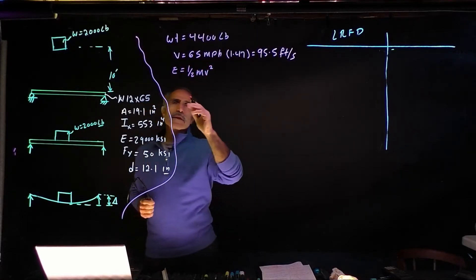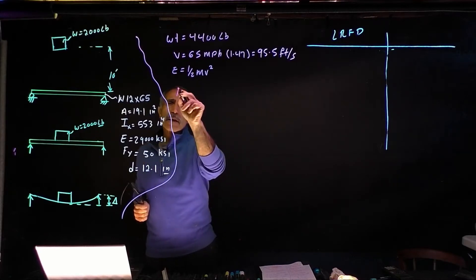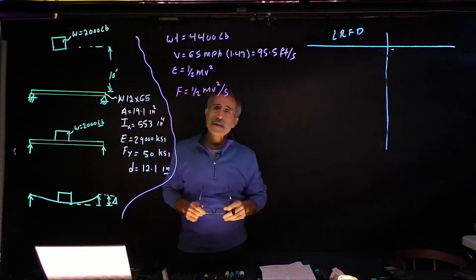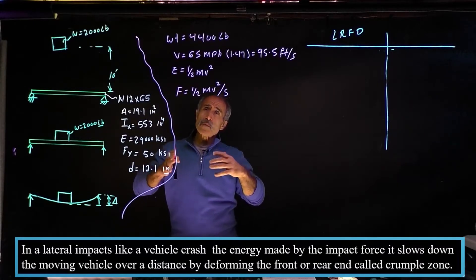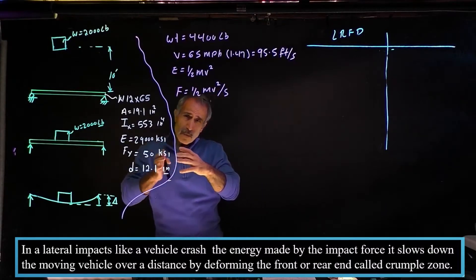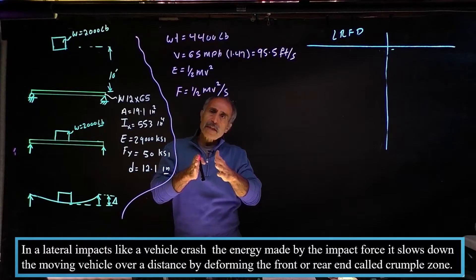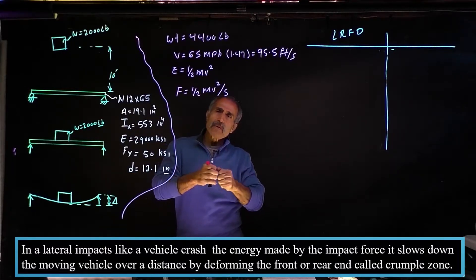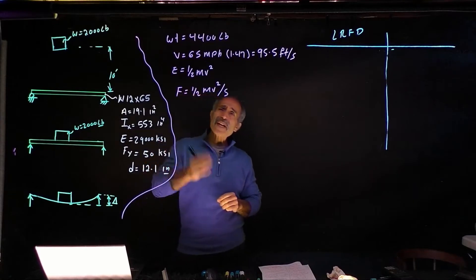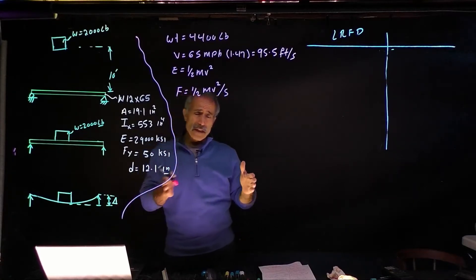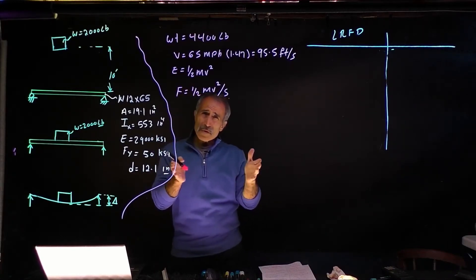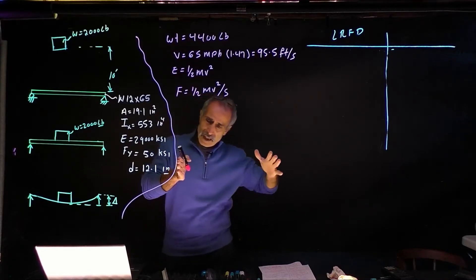The average force of the impact is calculated by F equals one half mv squared divided by the distance. At the time of impact, the total energy is transformed to strain energy. This strain energy, the moving object comes to a stop over a certain distance. That distance usually causes a crumple zone, deformation, deflection. So that distance is important. When the vehicle crashed in and we looked at the pickup truck, the front end of the pickup truck was about 1.6, about 18 inches almost, 18 to 20 inches had deflected. It just kind of crumpled in.